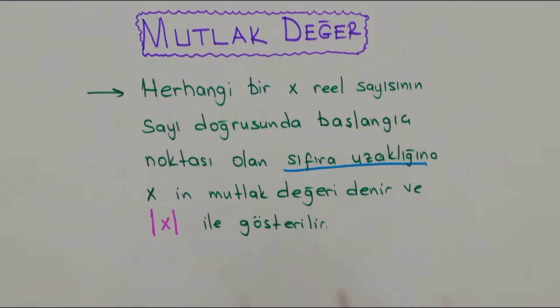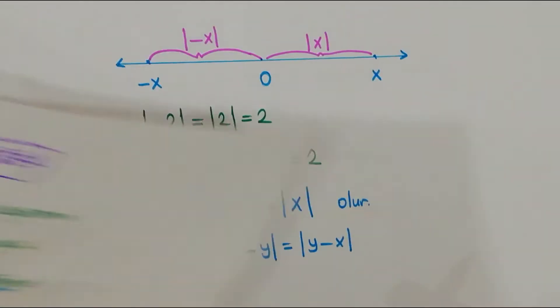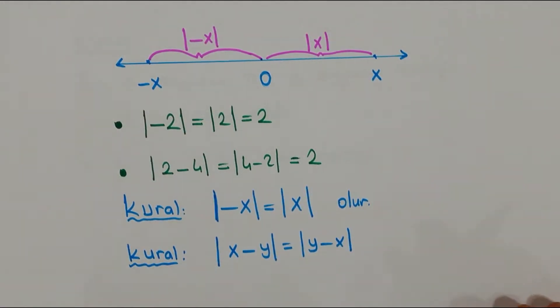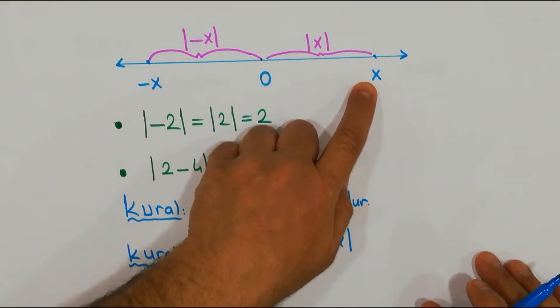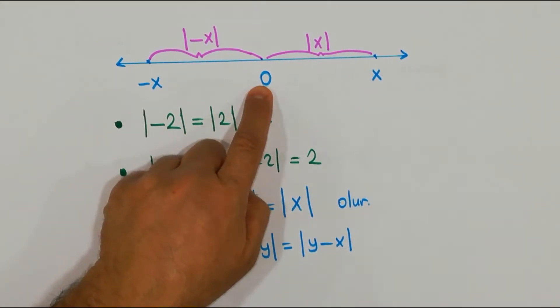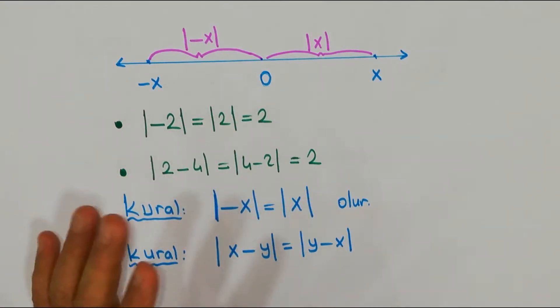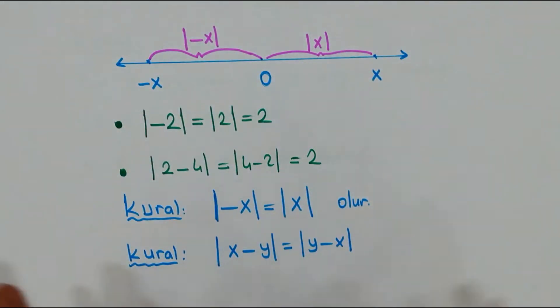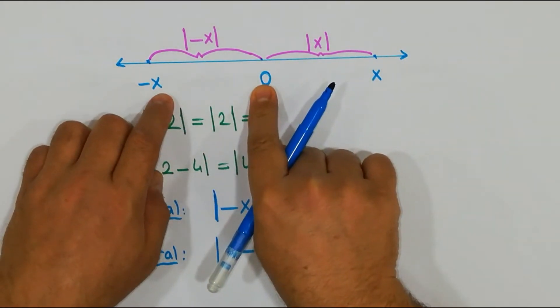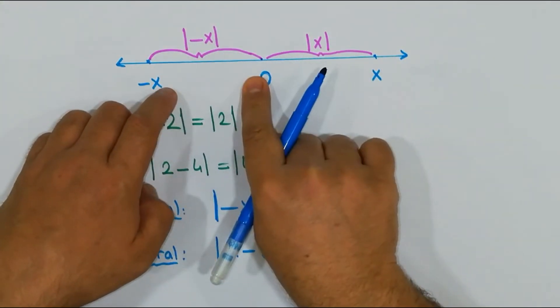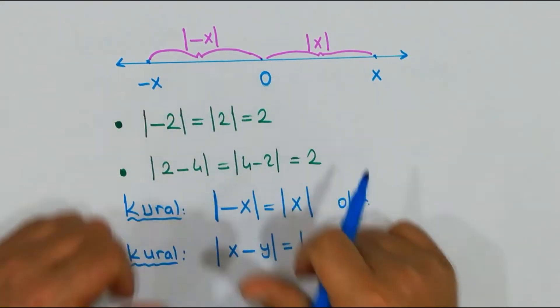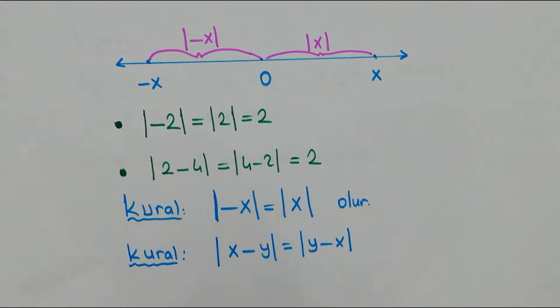Uzaklık ne demek arkadaşlar? %100 pozitif veya sıfır olması demek. Yani siz bir yeri ölçerken 'şurası eksi 50 santim' diyemiyorsunuz. O yüzden mutlak değer sonuç olarak daima pozitif. Şimdi uzaklıktan bahsettik - herhangi bir reel sayının başlangıç noktası olan sıfıra olan uzaklığı. Aldınız metreyi ve cetveli ölçtünüz, x birim kaldı değil mi?